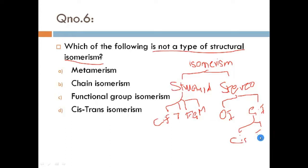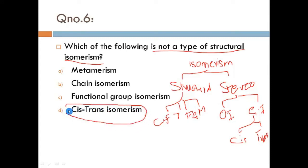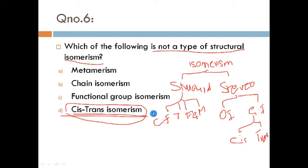So according to this, our answer is cis and trans isomerism, because cis-trans isomerism is NOT a type of structural isomerism — it is a type of stereo isomerism. So our answer is cis-trans isomerism.